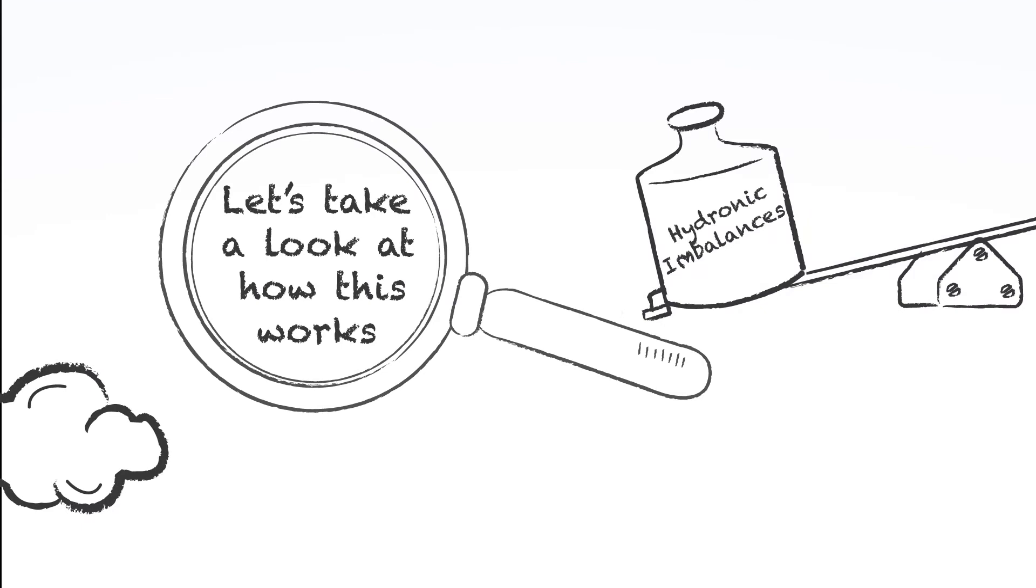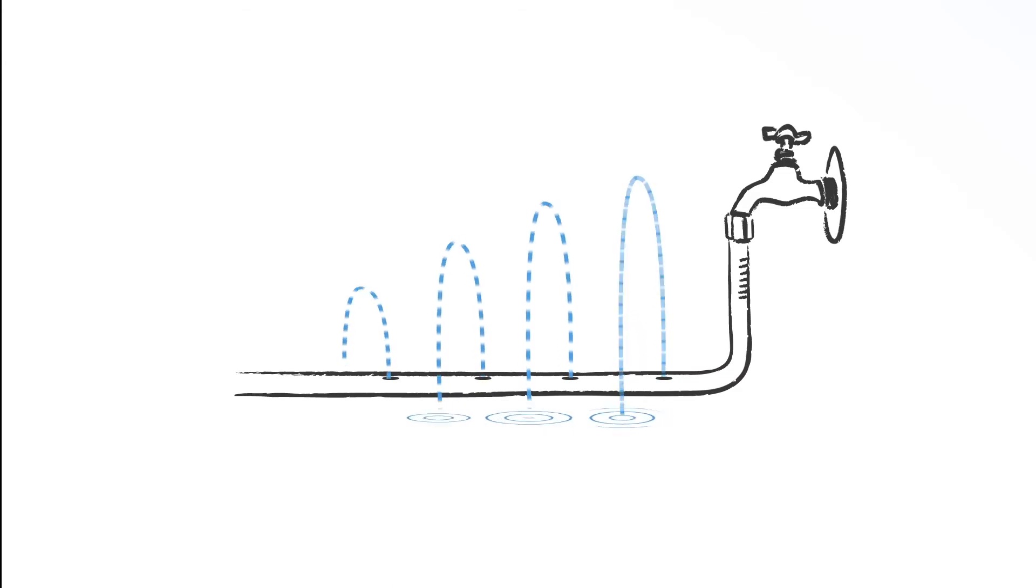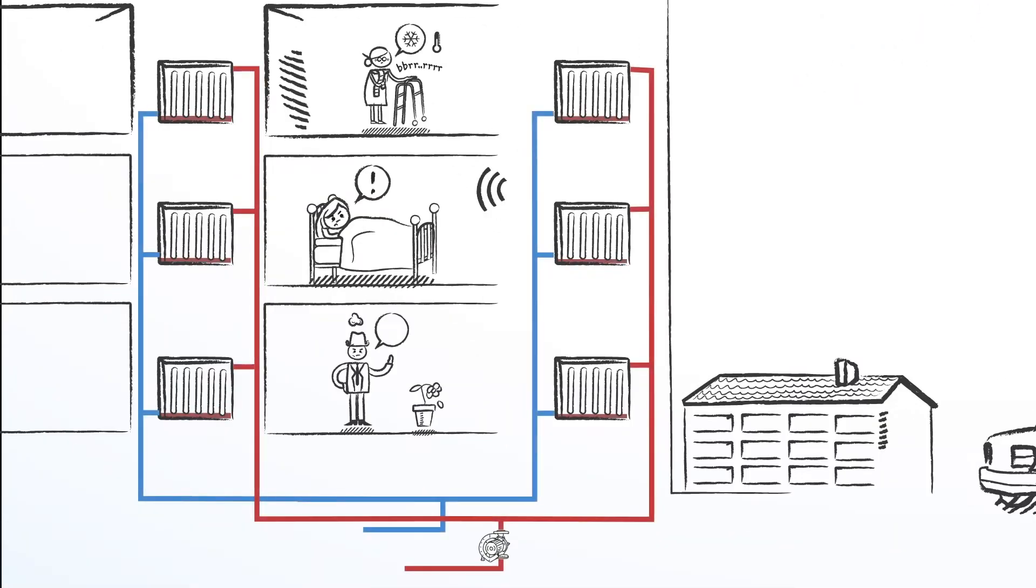Let's take a look at how this works. Water follows the path of the least resistance and takes the shortest route. In heating systems,